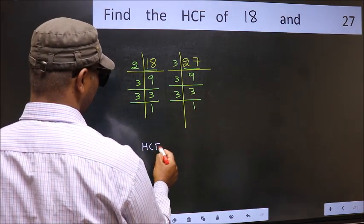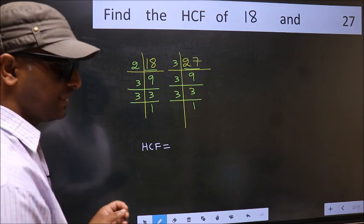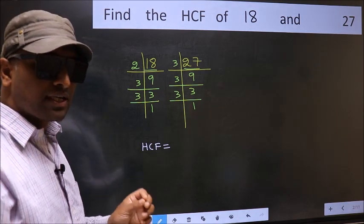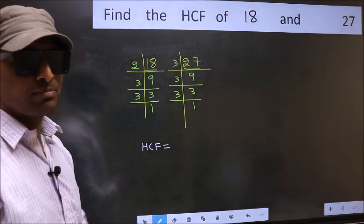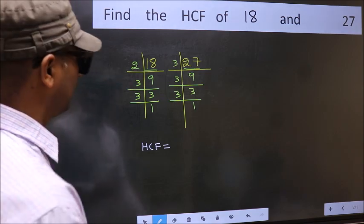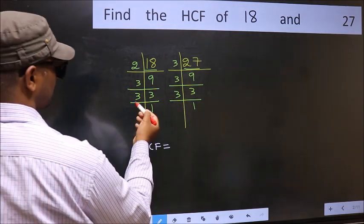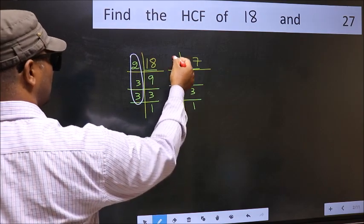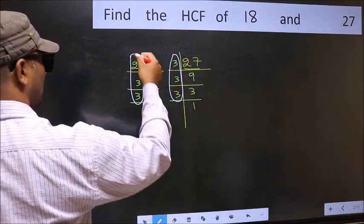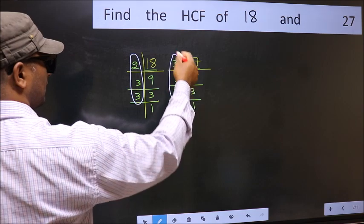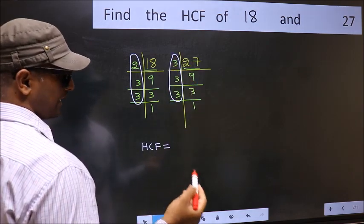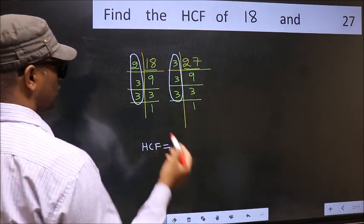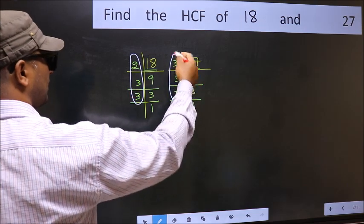our HCF is the product of the numbers which should be present in these two places. That is here and also here. Here and here. So, now let us find the numbers which should be present here and here.